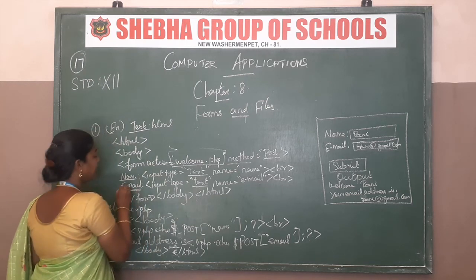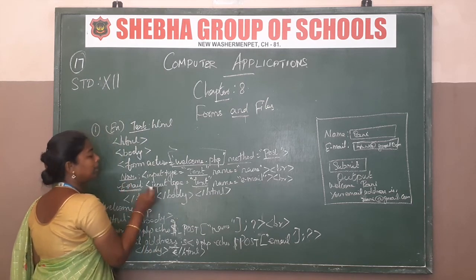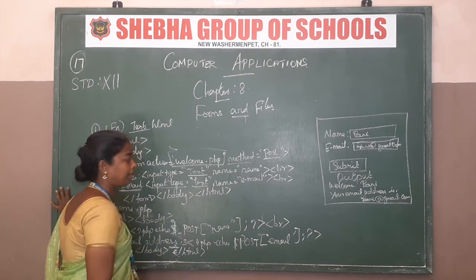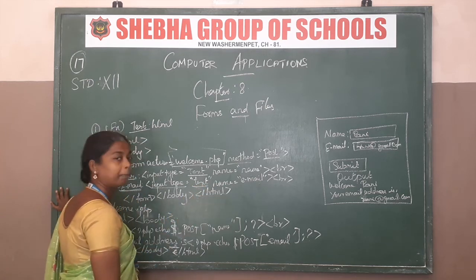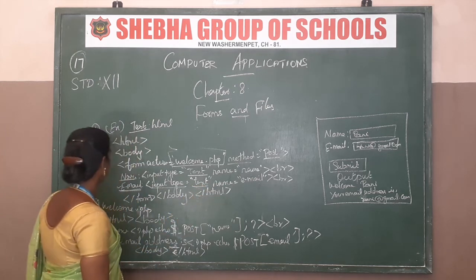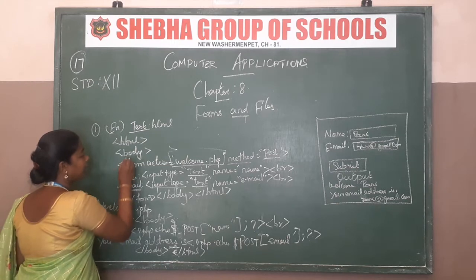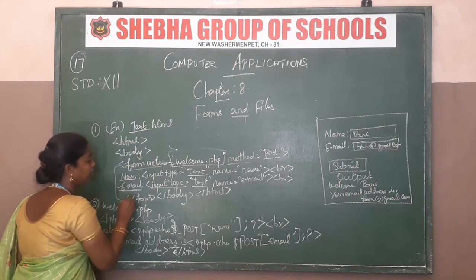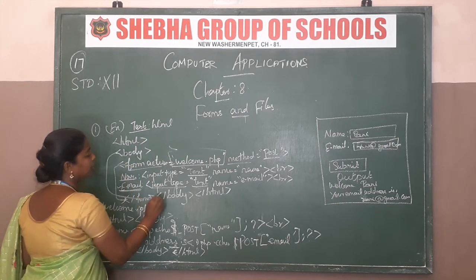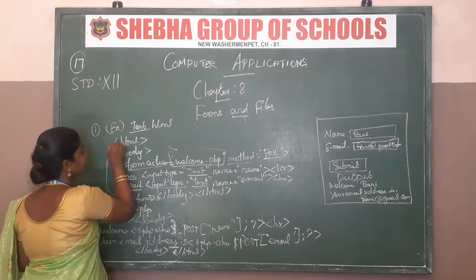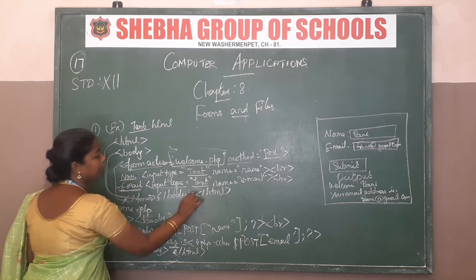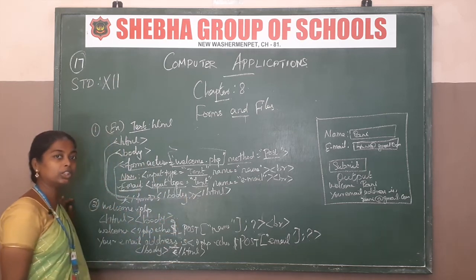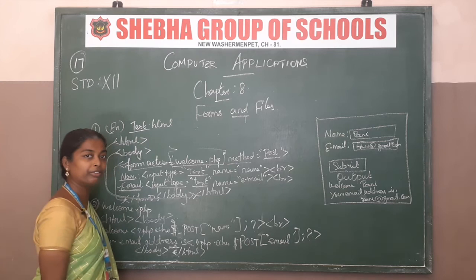The second line is email. Input type is text, name is 'email', then break. This is the body section with the form action. The form is closed, then the body section is closed, and last, HTML is closed. The first program HTML code is finished.